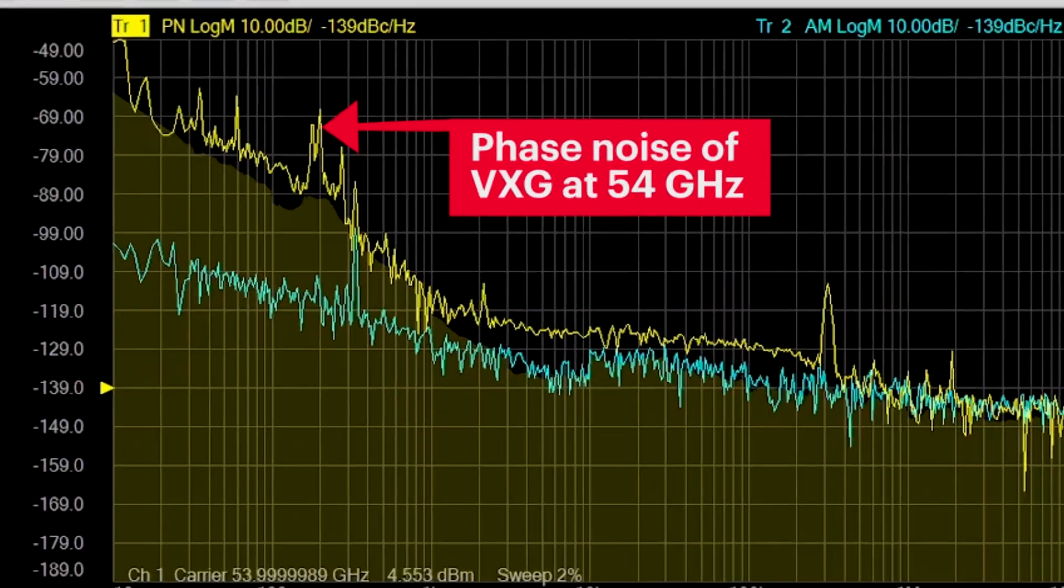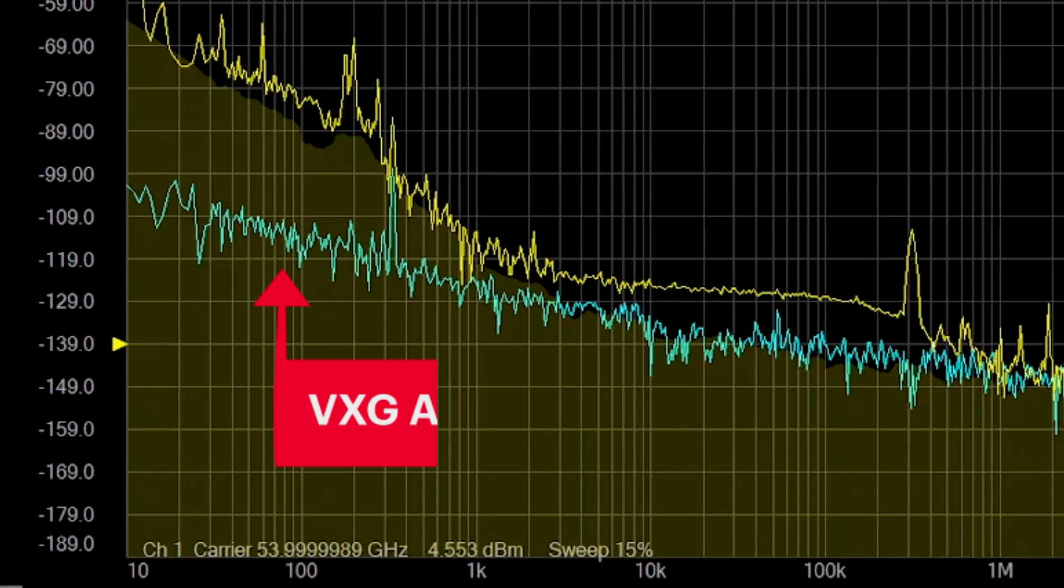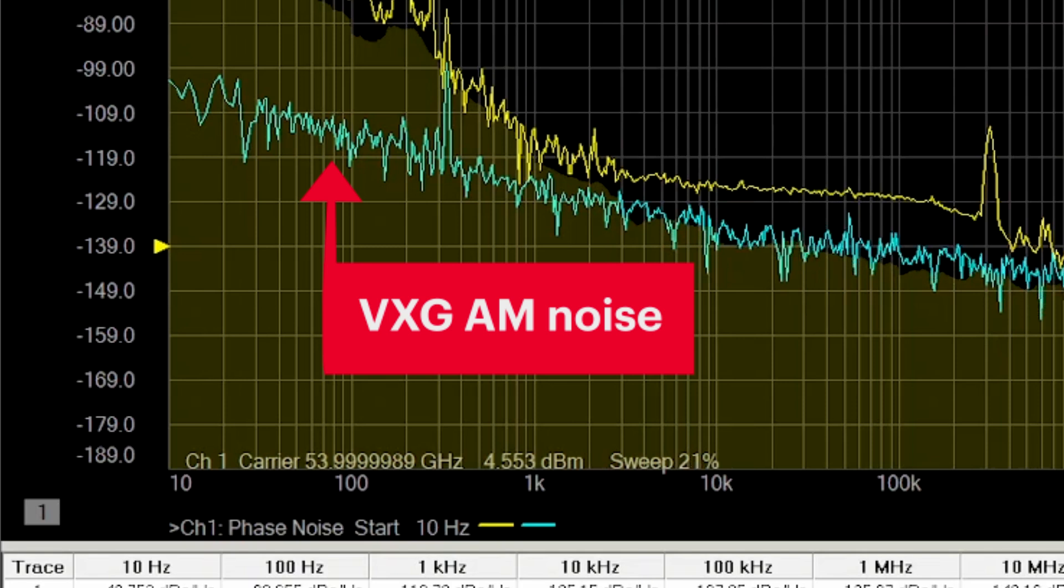The solid yellow trace is the phase noise of the VXG at 54 gigahertz, and the solid blue trace is the VXG AM noise, which is measured simultaneously.